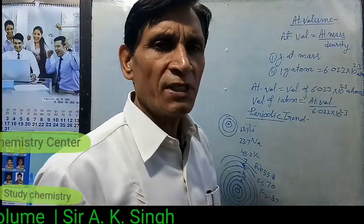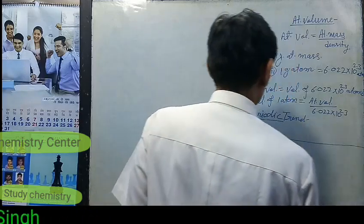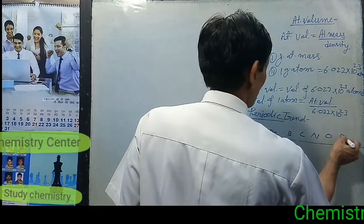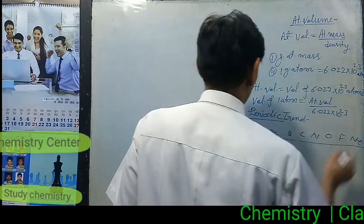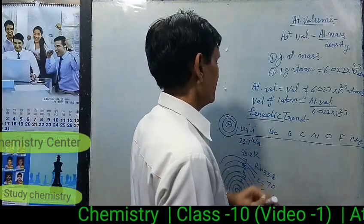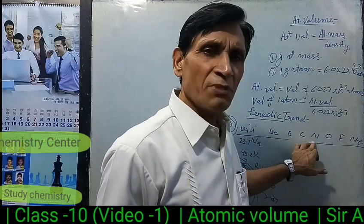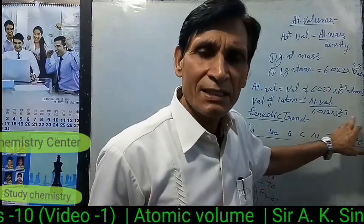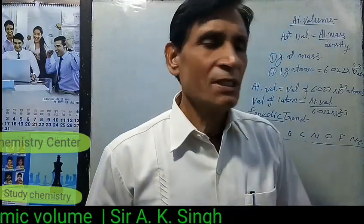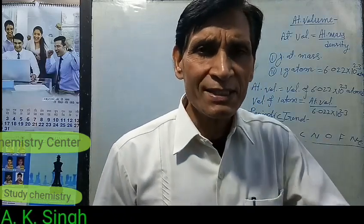Now let us see the variation of atomic volume across a period. Moving across the second period — beryllium, boron, carbon, nitrogen, oxygen, fluorine, and neon — atomic volume first decreases to a minimum, then increases.